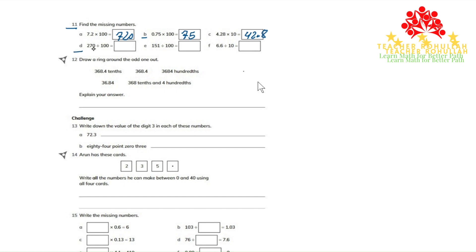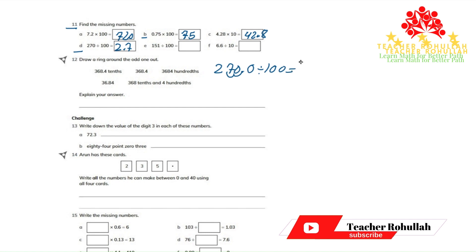In part D, 270 is divided by 100. When we divide 270 by 100, we get 2.7. Let me explain this here. 270 can be written as 270.0 divided by 100. Now if we divide a number by 100, the decimal point moves two places to the left — one place, two places. So after dividing, we will get 2.7. We don't write the trailing zeros after the decimal point once we are done.